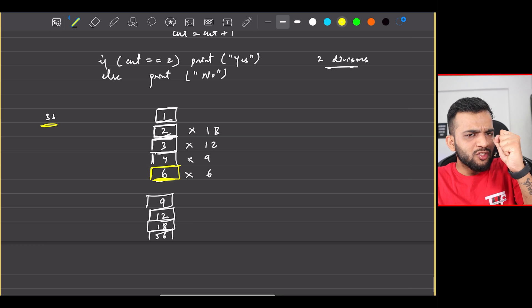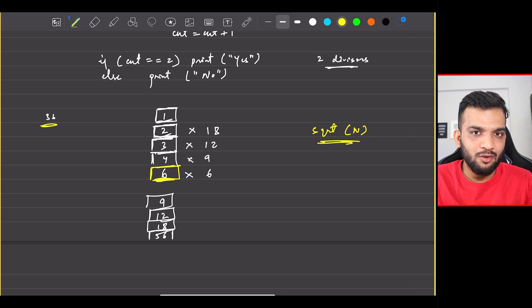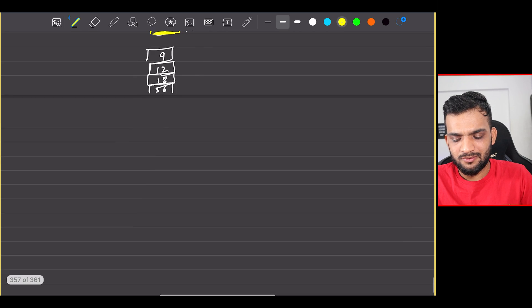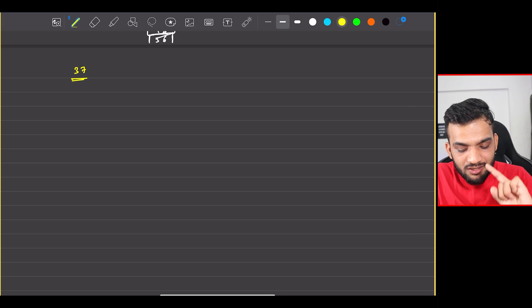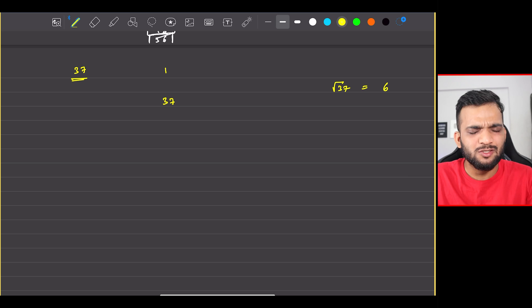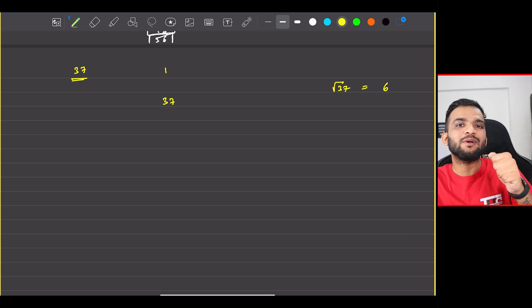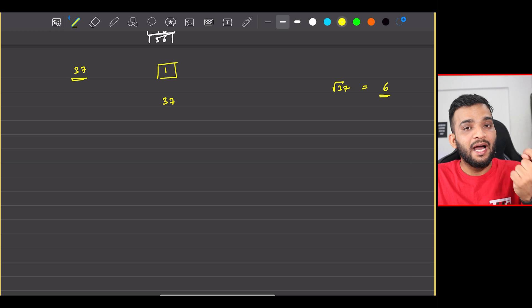So if I only check till 6 for a number 36, which means square root of the number, what will be the number of divisors? Let's take 37, which is prime. The divisors are 1 and 37. If I take square root of 37, that is 6 point something, integer value is 6. So if I check till 6, I'll just get one divisor.